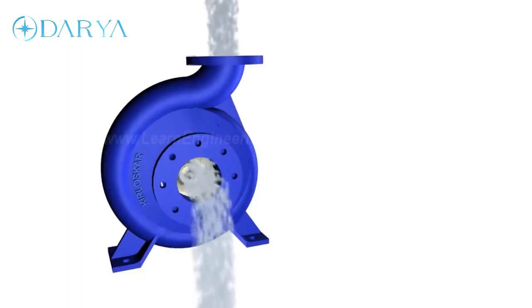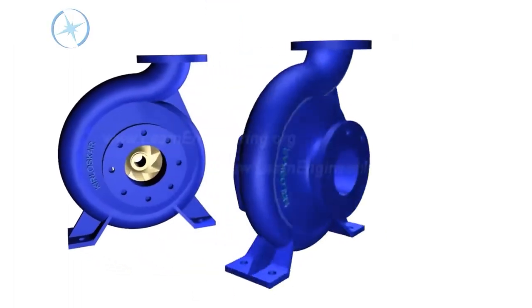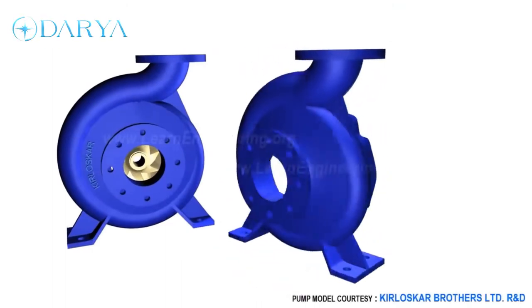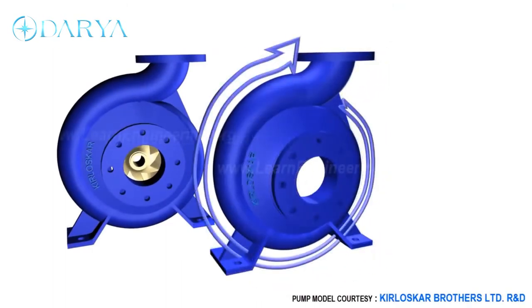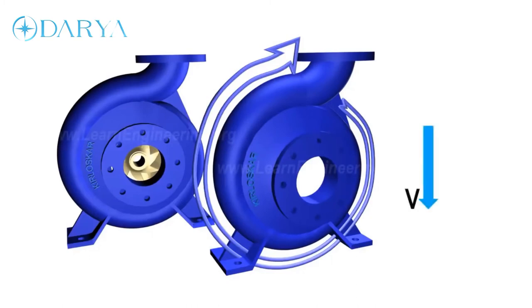Here you can note one specialty of casing. It has got increasing area along the flow direction. Such increasing area will help in accommodating newly added water stream and will also help in reducing exit flow velocity.